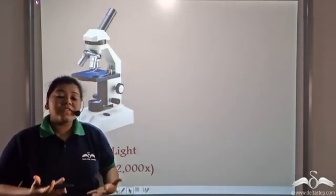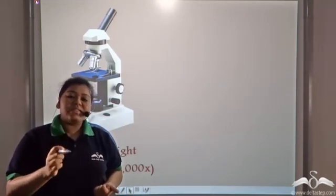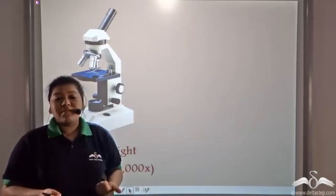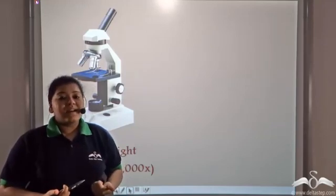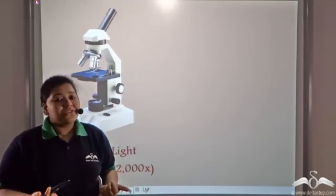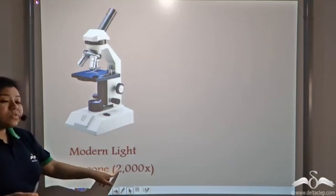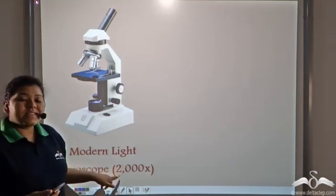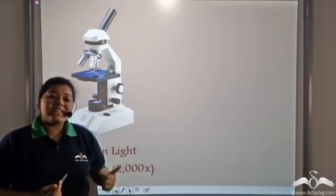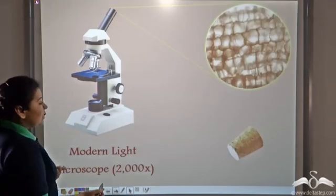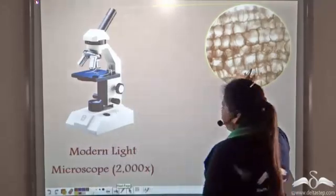Now, the observation that Robert Hooke made was of cork cells, but even those cells were too tiny to understand. They were not distinct enough. So, if you want to see the same cork cells with a better magnification, you can use a modern light microscope that has a magnification of 2000x. That is, ten times more than what the simple microscope was giving.